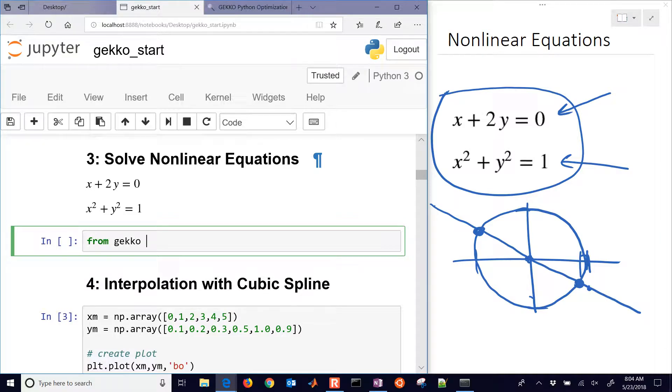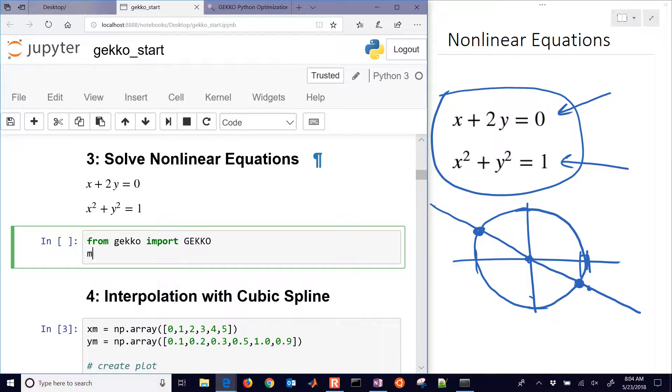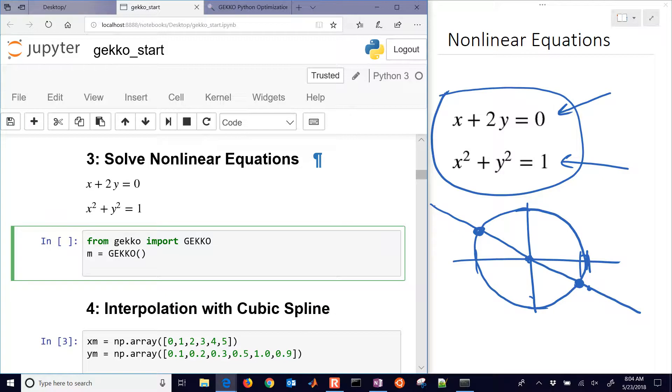So from gekko import GEKKO, and then we'll have a new model, m, and we'll set up our variable.